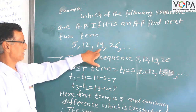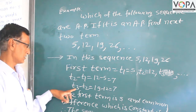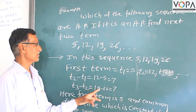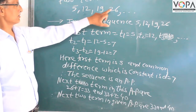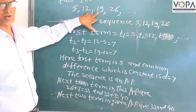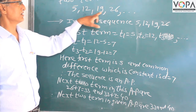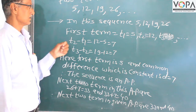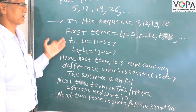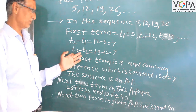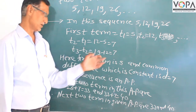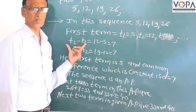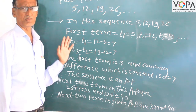The third term is 19 and the second term is 12, so T3 minus T2: 19 minus 12 is equal to 7. Similarly, T4 minus T3: 26 minus 19 is equal to 7. The common difference, which is constant, is 7. Therefore, the sequence is an AP, because the common difference of two consecutive terms is constant.